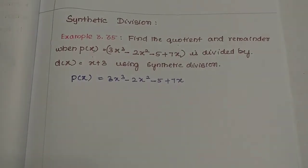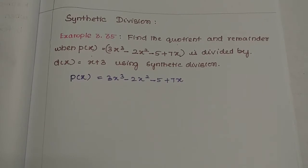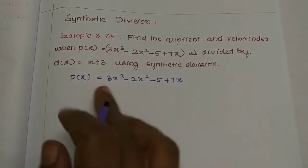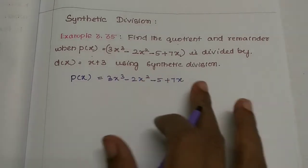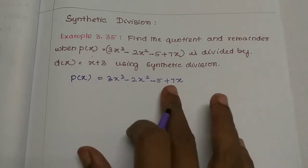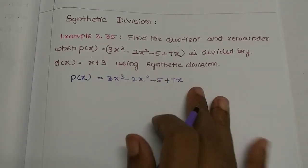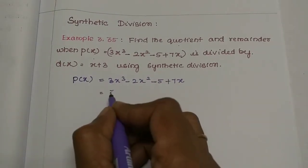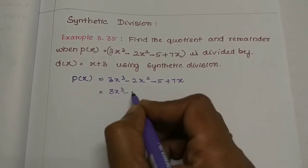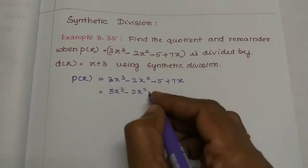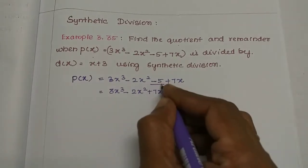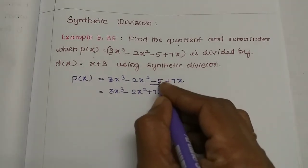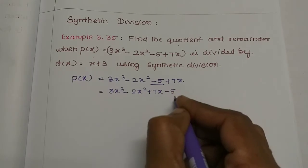Okay, so the first step when dividing is to use the standard formula. For a polynomial, we arrange terms in order: x³, then x², then x, then the constant. So we rearrange p(x) as 3x³ - 2x² + 7x - 5. The signs are important — minus is the symbol for 5, and that stays the same.